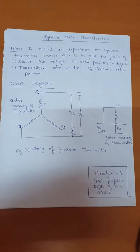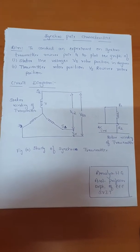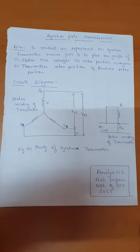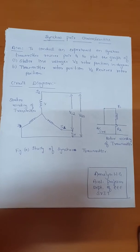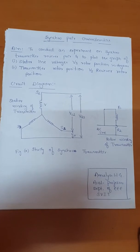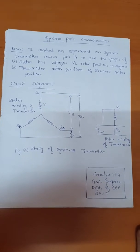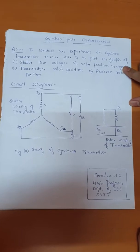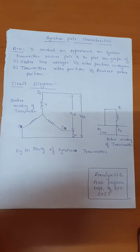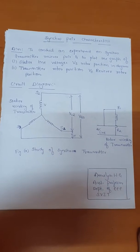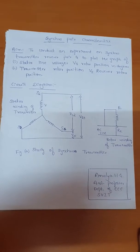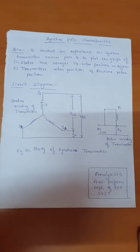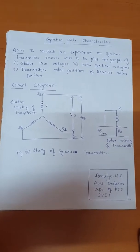Coming to the aim of the experiment, we need to conduct a synchro pair and plot the graph for two cases. The first case is stator line voltage with respect to rotor position in degrees, and the other one is the transmitter rotor position with respect to the receiver rotor position. This is the aim of the experiment.